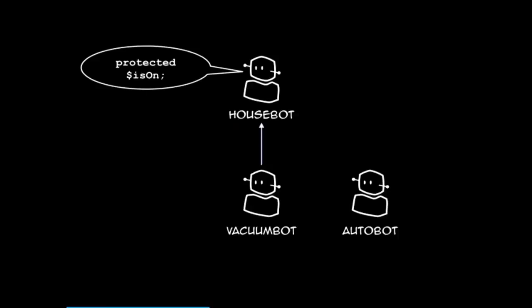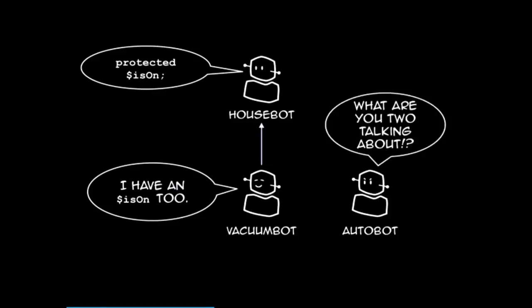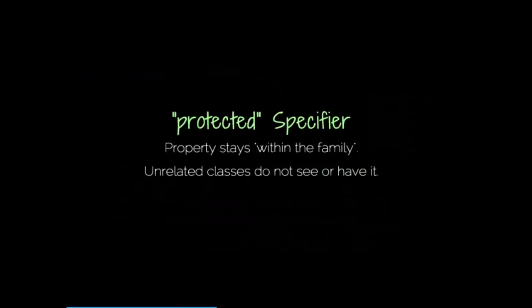There's a third case that's kind of in the middle: protected. We have a variable called 'is_on' defined as protected in the parent class HouseBot. VacuumBot has that variable too, so it can work with it as well. But AutoBot has no idea what anyone else is talking about, because it's not related to HouseBot at all. The protected specifier says the property stays within the family — the same lineage of classes. Any unrelated classes do not have or see the variable.